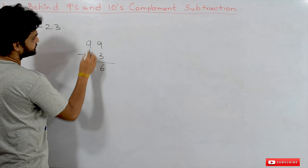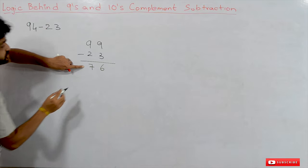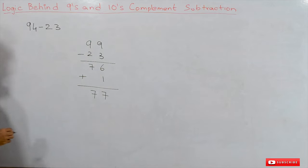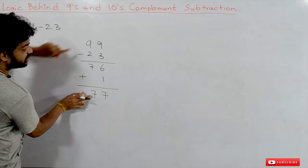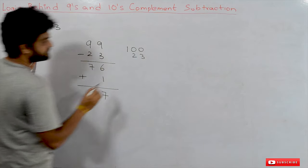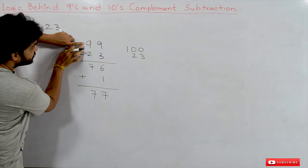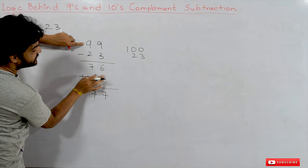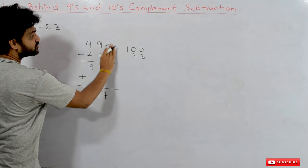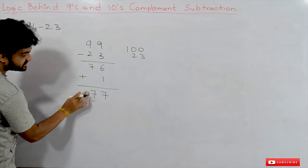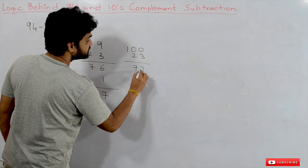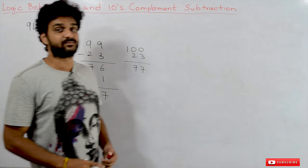The 9s complement of 23 is 99 minus 23, which equals 76. Adding 1 gives us 77. How has this 77 been obtained? It is actually 100 minus 23 — because we subtracted 23 from 99 and then added 1, which turns 99 into 100. So the result 77 has been obtained by 100 minus 23, which is indeed 77.